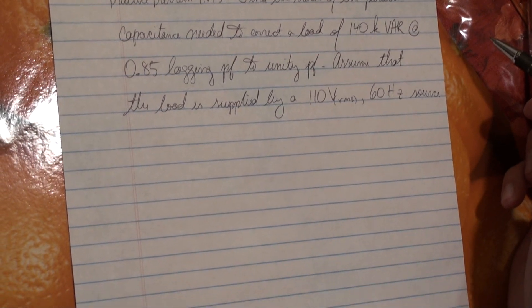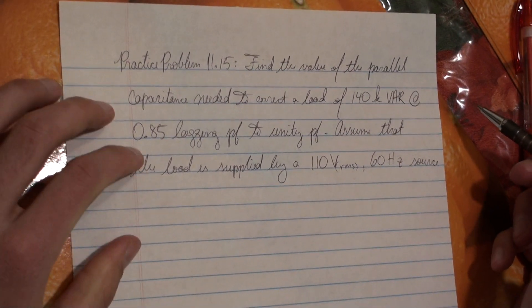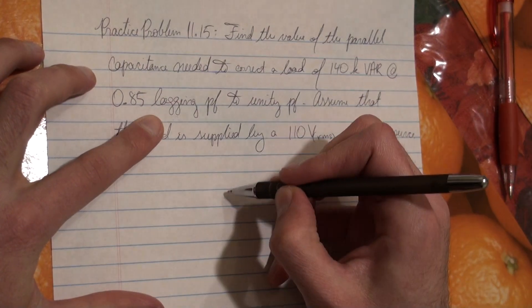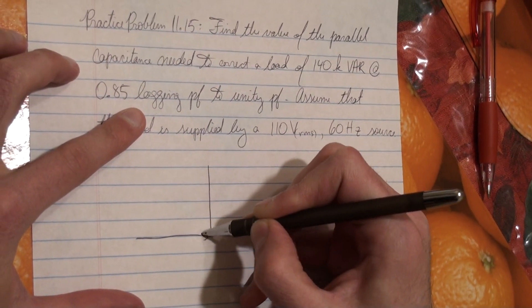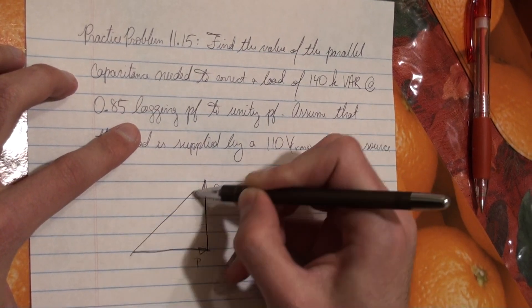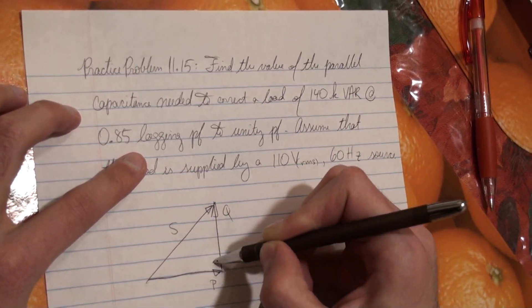So we're given already a good amount of information. We know that power factor is 0.85 lagging, so we know that the power triangle is going to look like this. You have your real power here, you have your reactive power here, and you have your apparent power S like this.